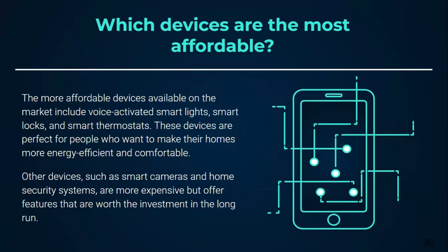Which devices are the most affordable? The more affordable devices available on the market include voice-activated smart lights, smart locks, and a smart thermostat. These devices are perfect for people who want to make their homes more energy efficient and comfortable. Other devices such as smart cameras and home security systems are more expensive but offer features that are worth the investment.